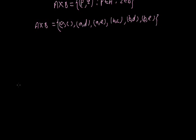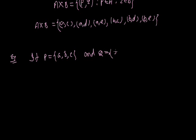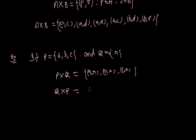If P is an element in A and Q is an element in B, then (P,Q) is an element in A into B. For example, if P is equal to {A, B, C} and Q is equal to {R}, then P into Q will be {(A,R), (B,R), (C,R)} and Q into P will be {(R,A), (R,B), (R,C)}. So ordered pair (A,R) is not equal to ordered pair (R,A), hence P into Q is not equal to Q into P.